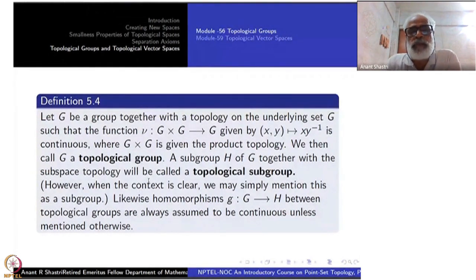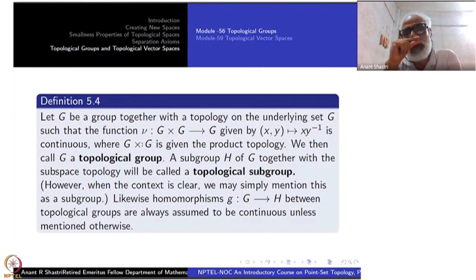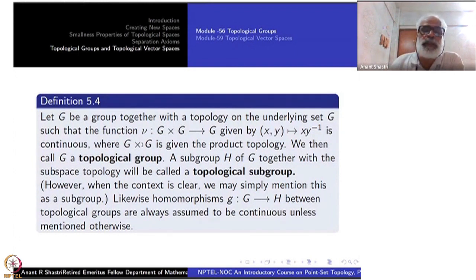Let G be a group together with a topology on the underlying set G such that the product map ν: (x, y) ↦ xy⁻¹ is continuous, where G × G carries the product topology. We then call G a topological group.